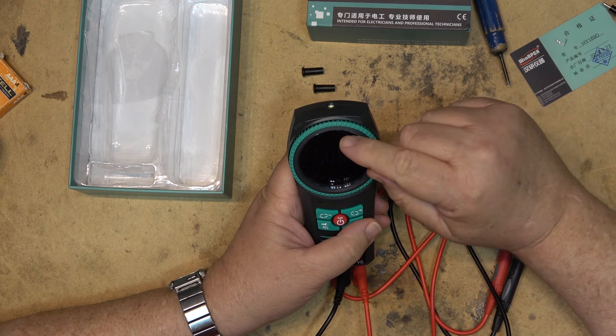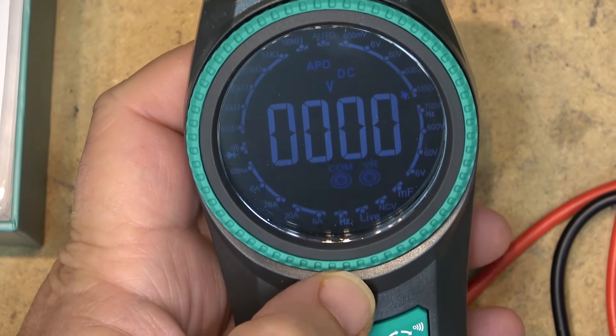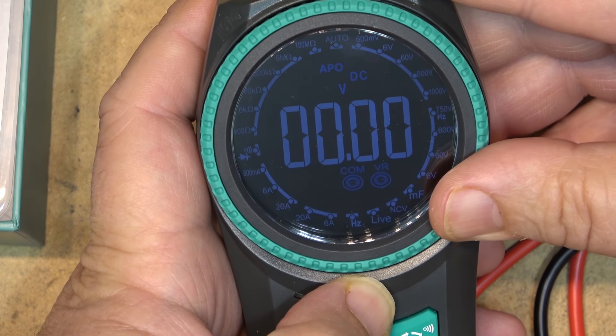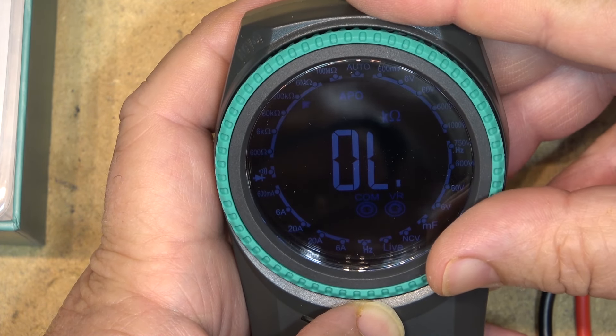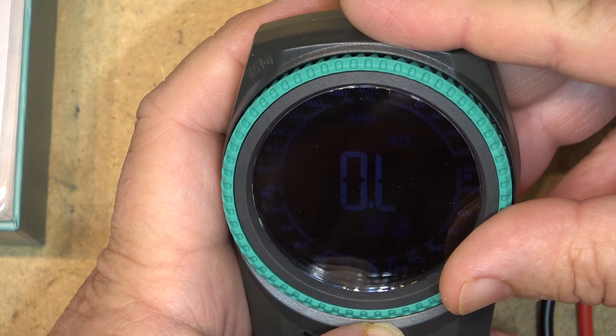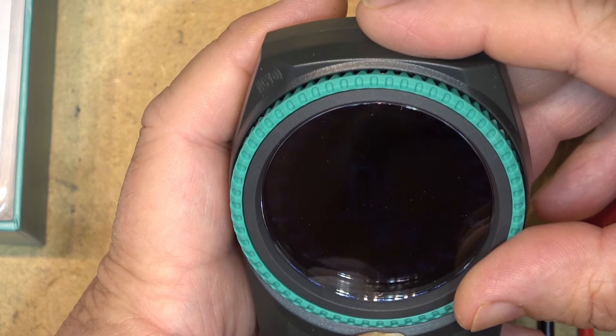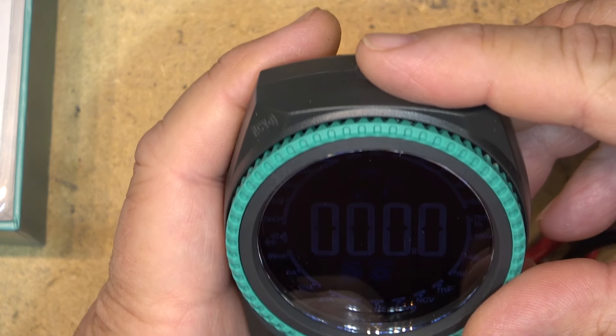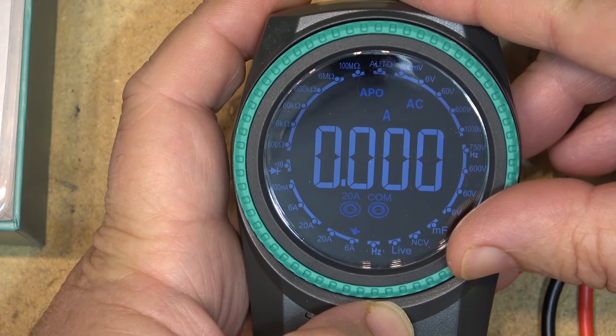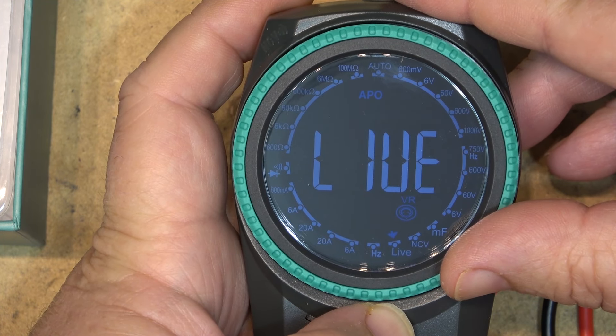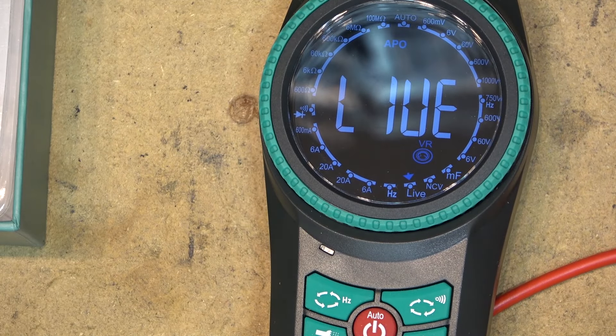You can set it on auto or you can set individual voltages. There's a little indicator here that moves around as you turn the dial. That's auto range, and that's 100 megaohm range, 6 megaohm, 600K, 60K, 6K, 600 ohms, your diode test, and then here's the current readings for AC current and DC current.